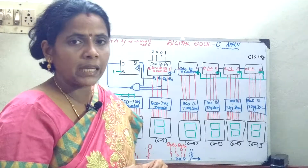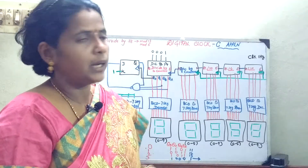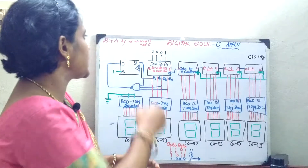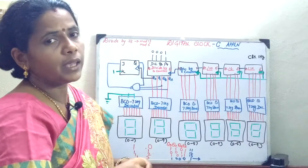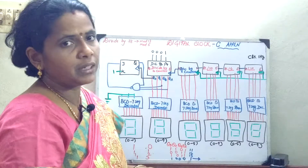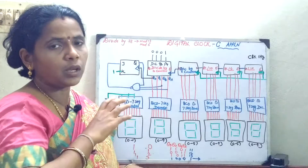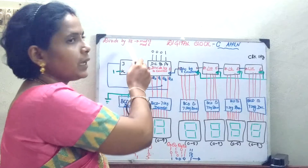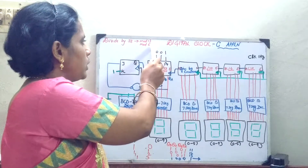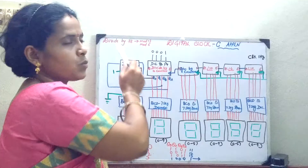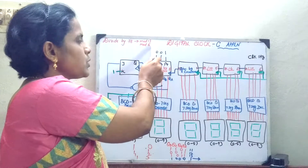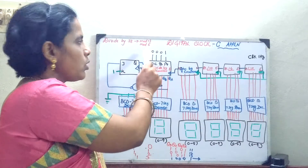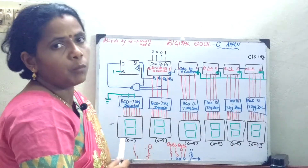Now in today's session, we will be seeing about a digital clock — it is nothing but a counter application. Before proceeding to the circuit diagram, let us see a small example. Suppose we are given a divide-by-78 counter to design. In that case, we cannot design a single counter. We can factor 78 as 13 times 6, so I will be using two counters: mod 13 and mod 6. Mod 6 means for every 6 states it will count from 0 to 5. So I am going to divide the counters and use them to implement a mod-78 counter.